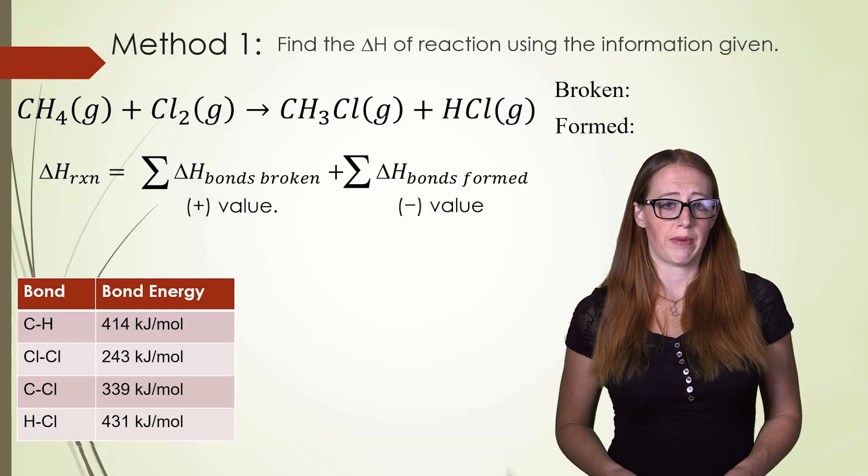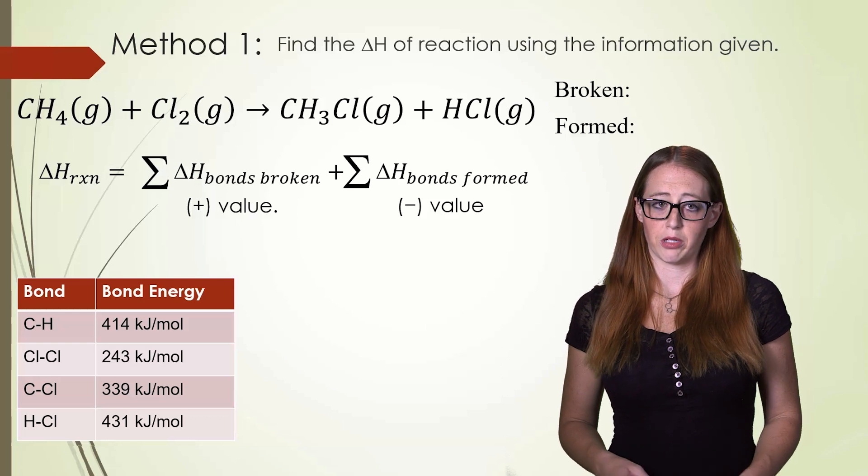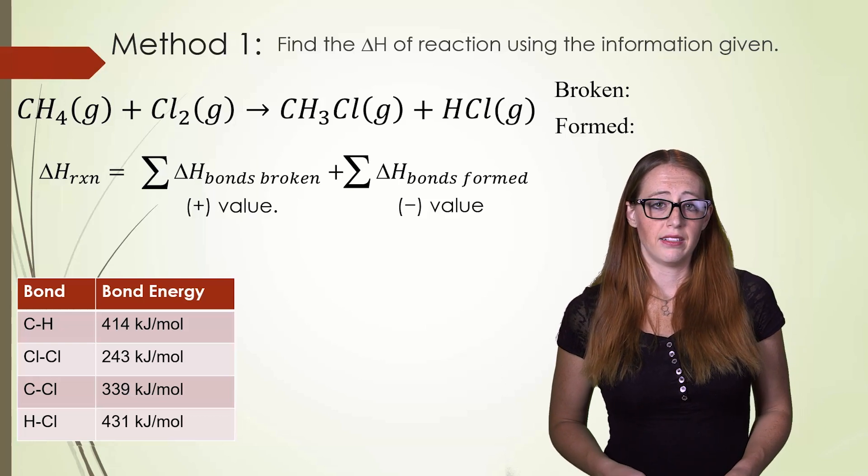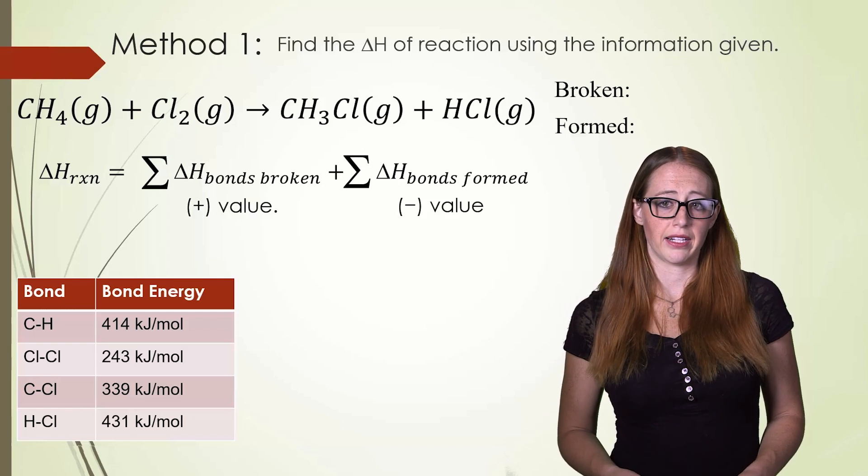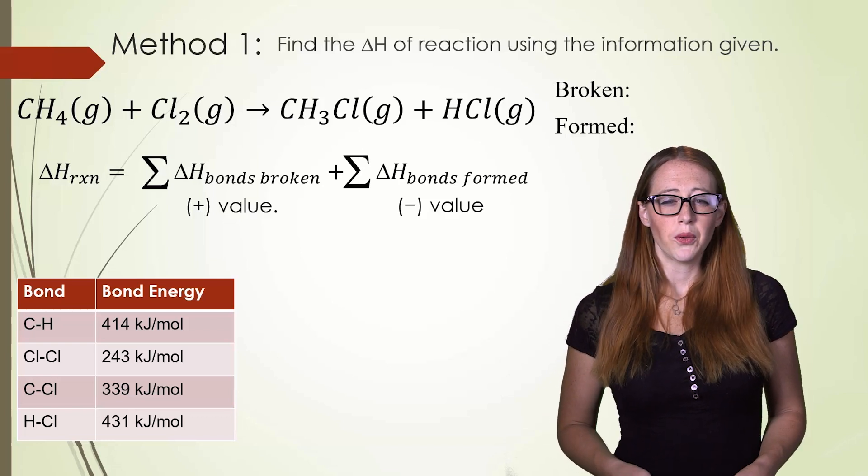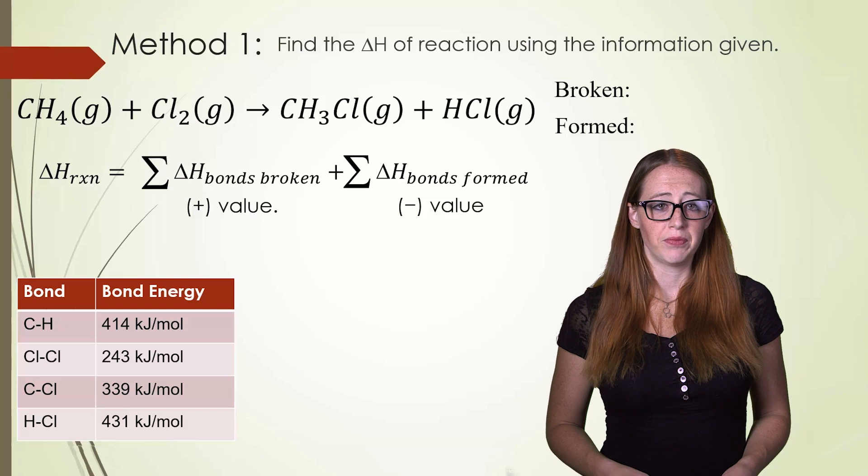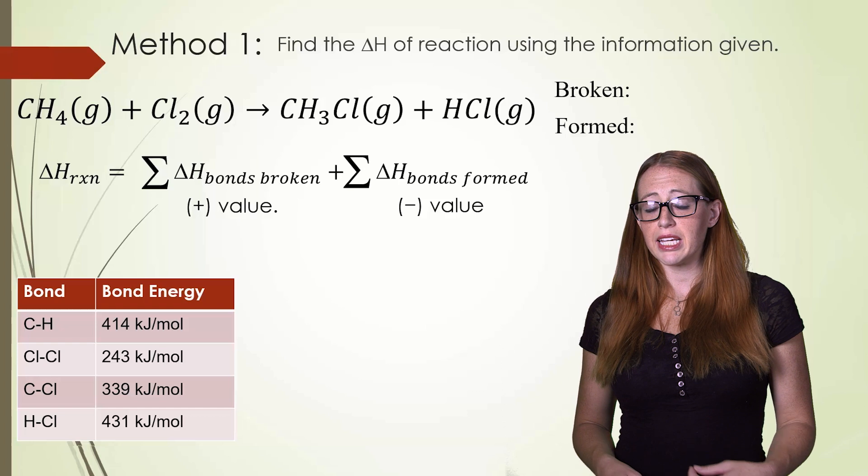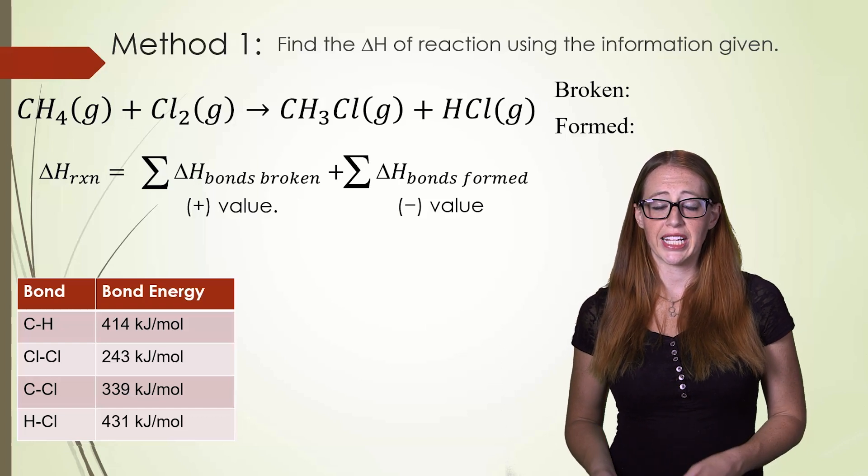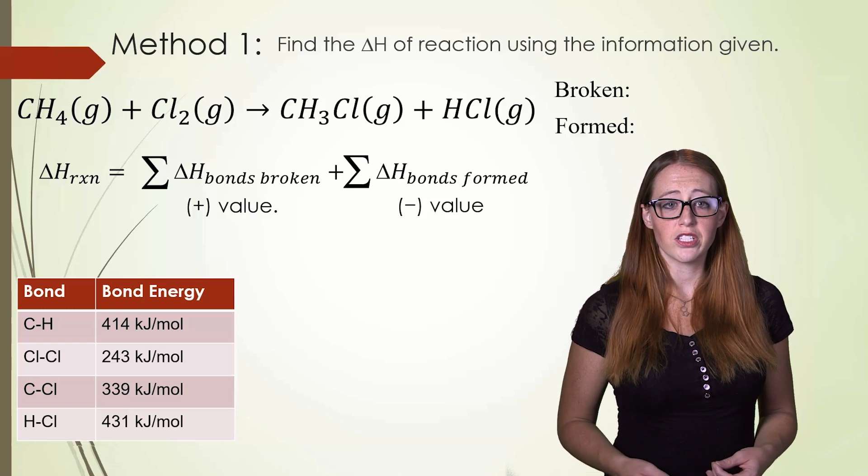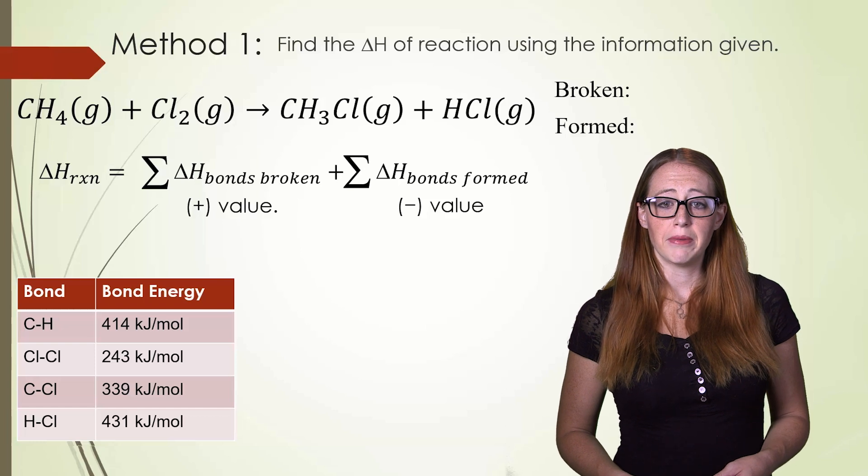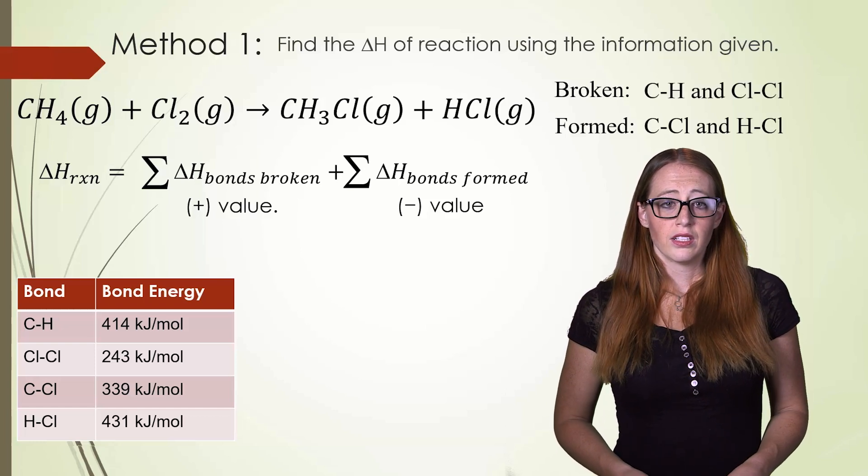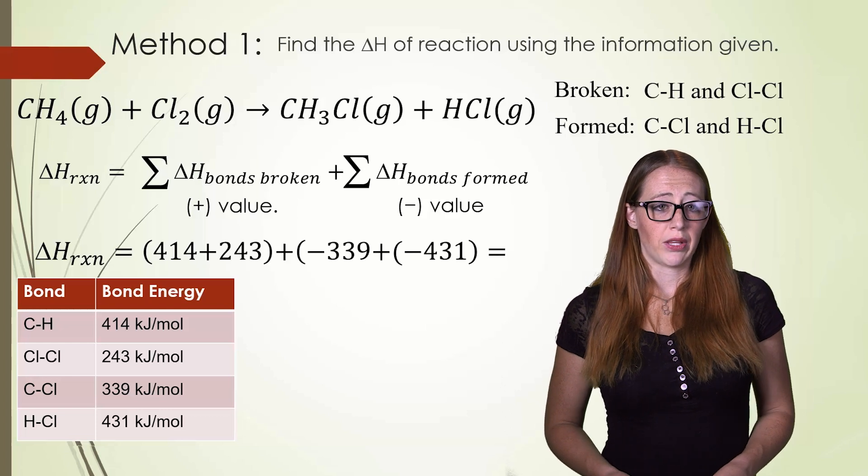We have one C-H bond and one Cl-Cl bond that are broken. And then we form one C-Cl bond and we also form one H-Cl bond. We can take the values from the table and use the equation to solve for this. So here we have bonds broken being a positive value because you are putting energy in. We have bonds formed being a negative value because you are releasing energy.